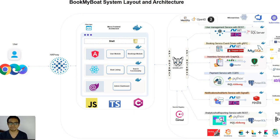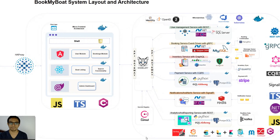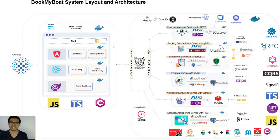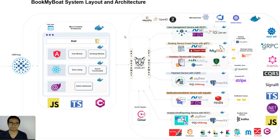The technical stack in which the application will be developed is displayed here. The UI will be in the form of a micro frontend architecture and it will have Angular, React, and Blazor based application modules. The user module and booking module will be based on Angular, the board listing and search functionality will be on React, and Blazor will serve as the application stack for the admin dashboard.